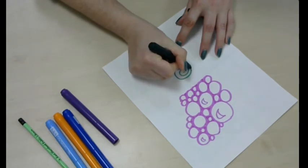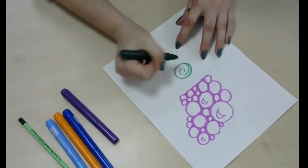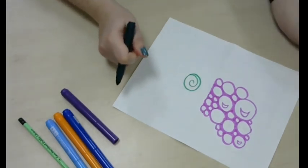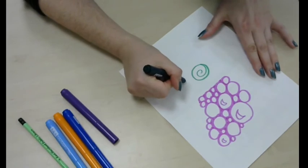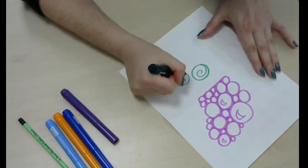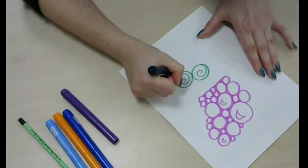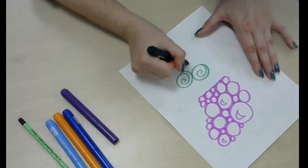Once you've got about the size you want, you want to curl it back in, so you end up with a circle with a spiral in it. And just keep adding spirals all around it, sort of like the bubbles. Ideally you want them to touch, which is pretty tough to do.